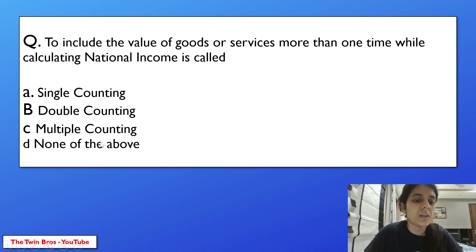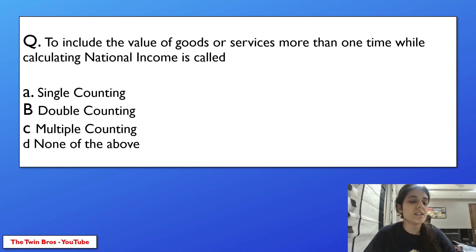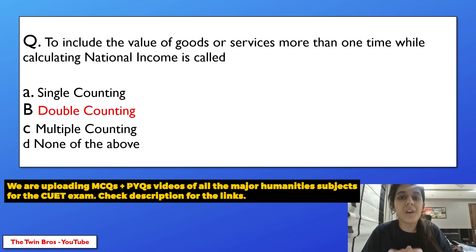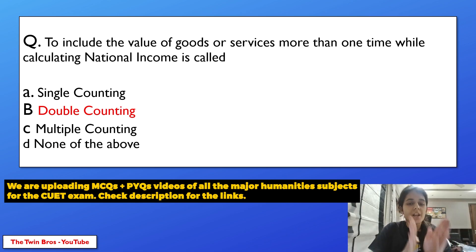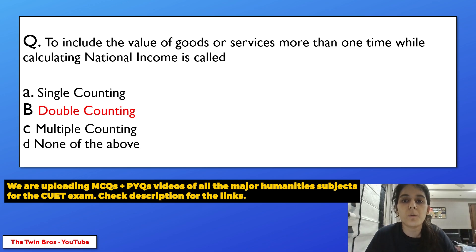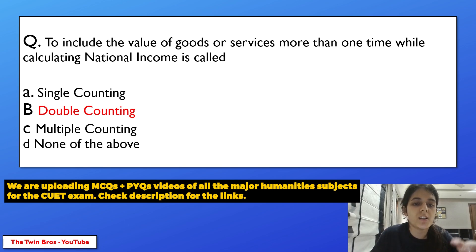To include the value of goods or services more than one time while calculating national income is called double counting. For example, suppose a farmer gives wheat to a biscuit factory and the biscuit is sold for 10 rupees. The wheat cost is already included in that price. If we add the wheat cost again separately to national income along with the biscuit cost, that is double counting — we have added wheat cost twice. This gives a wrong result for national income.